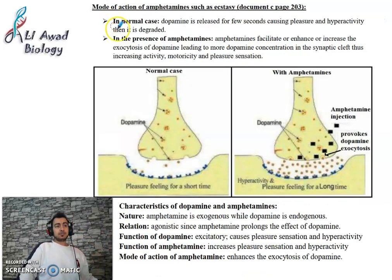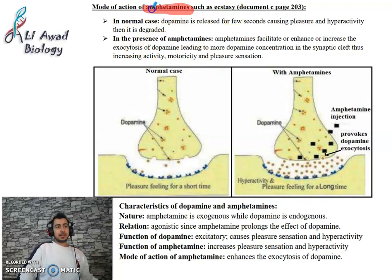Now let's move to another drug called amphetamines — in Arabic, 'al-munashitat' (stimulants).